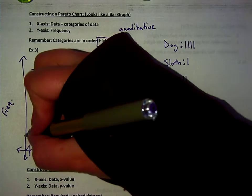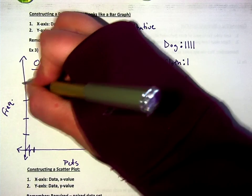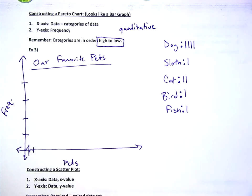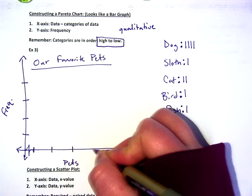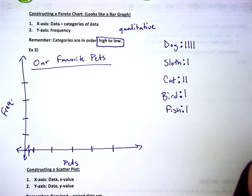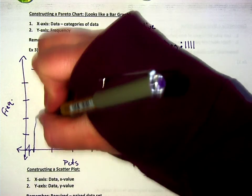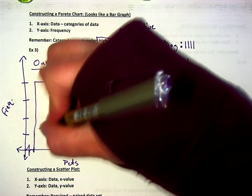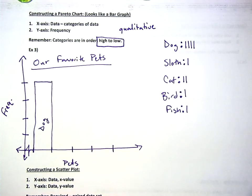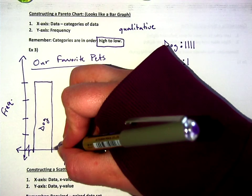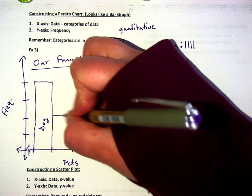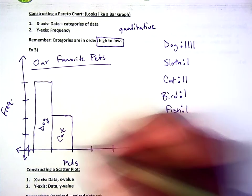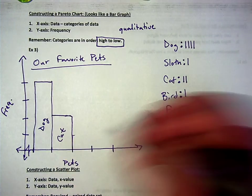All right, so our highest category had four. All right, so I'm going to put dog first. And then cat.